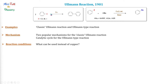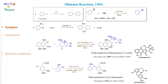The classic Ullmann reaction is an organic reaction that uses copper metal and thermal conditions to couple two molecules of aryl halide to form a biaryl. The Ullmann-type reaction includes copper-catalyzed nucleophilic aromatic substitution with aryl halide to form the desired product.